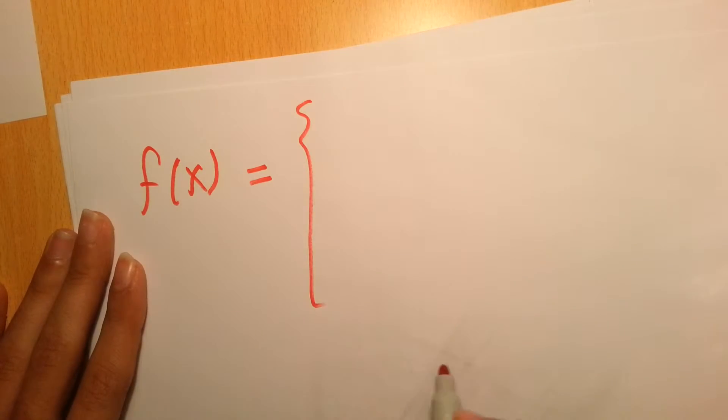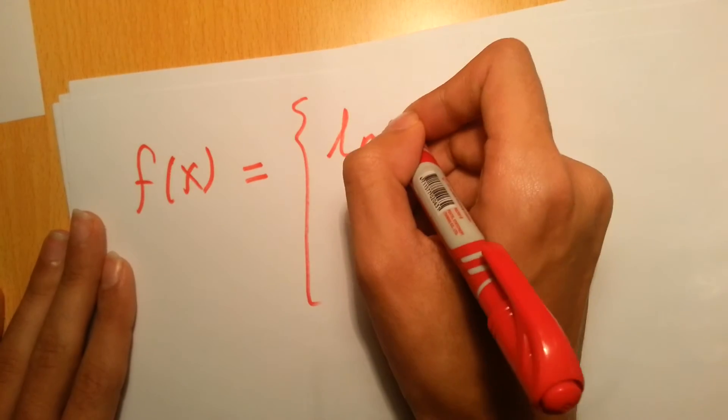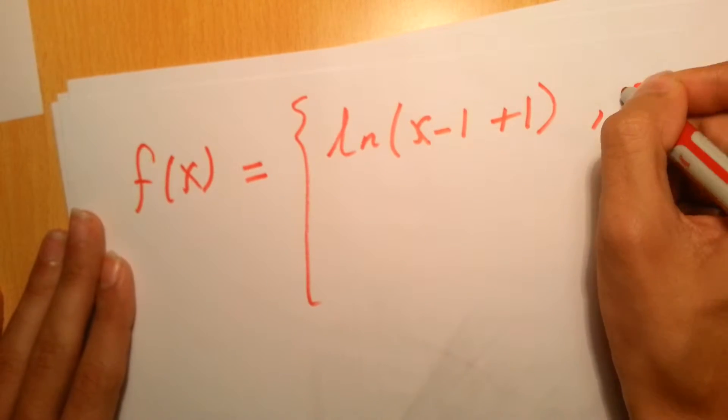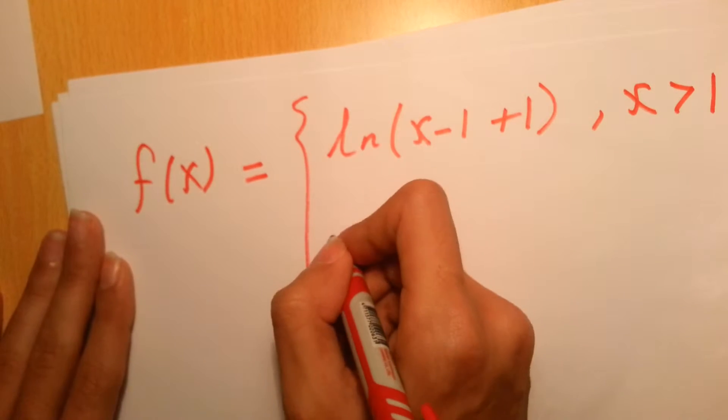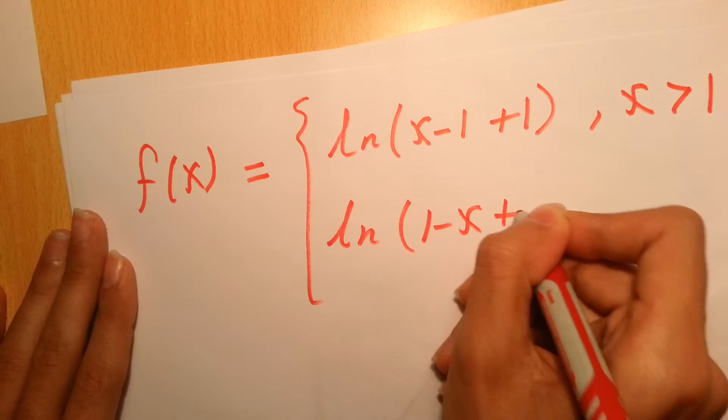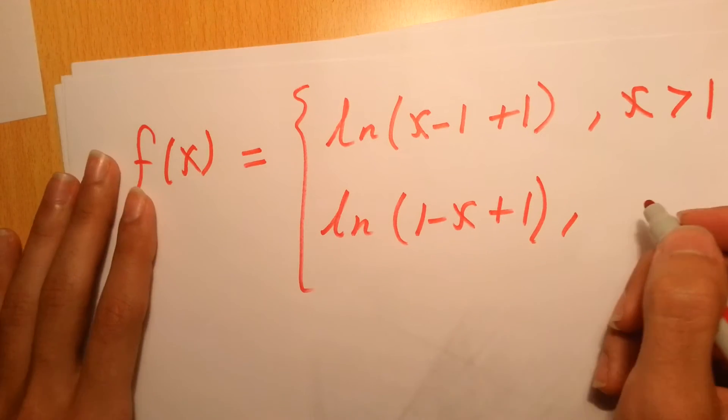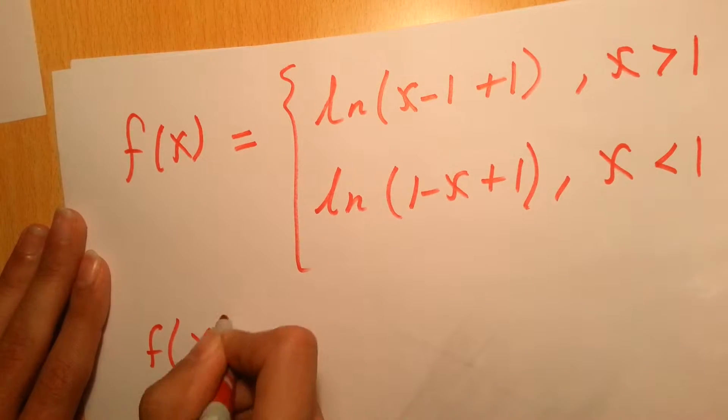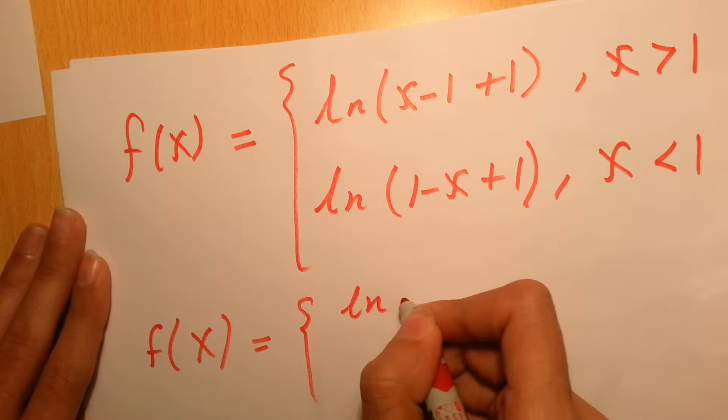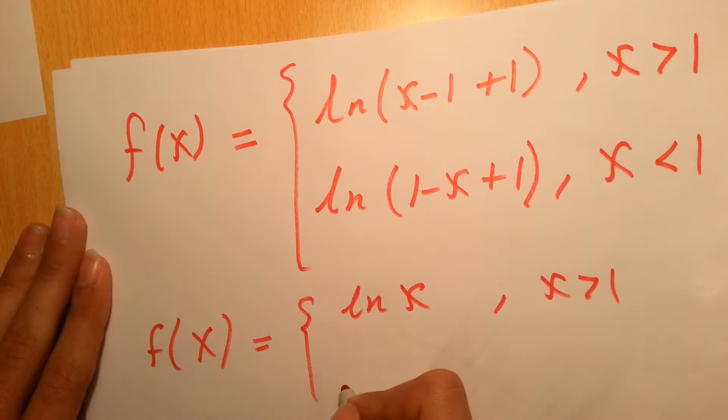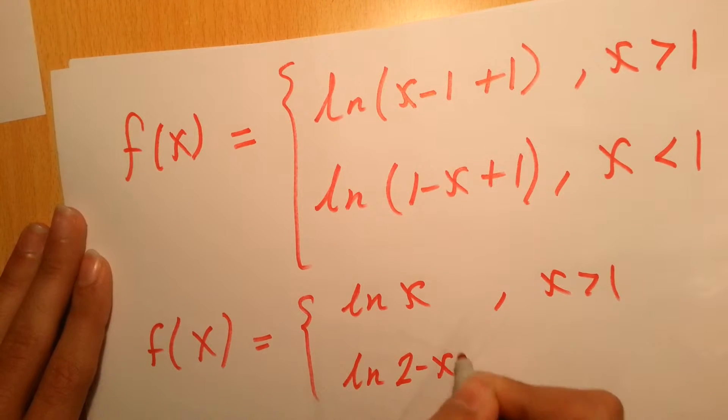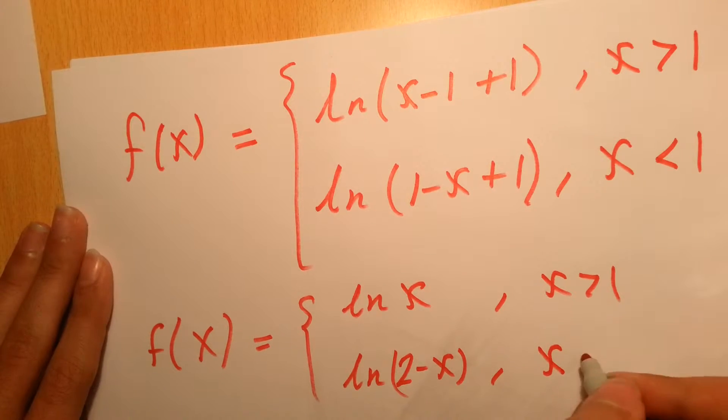The new function f of x will be written this way: ln x for x greater than 1, and ln of 2 minus x for x less than 1.